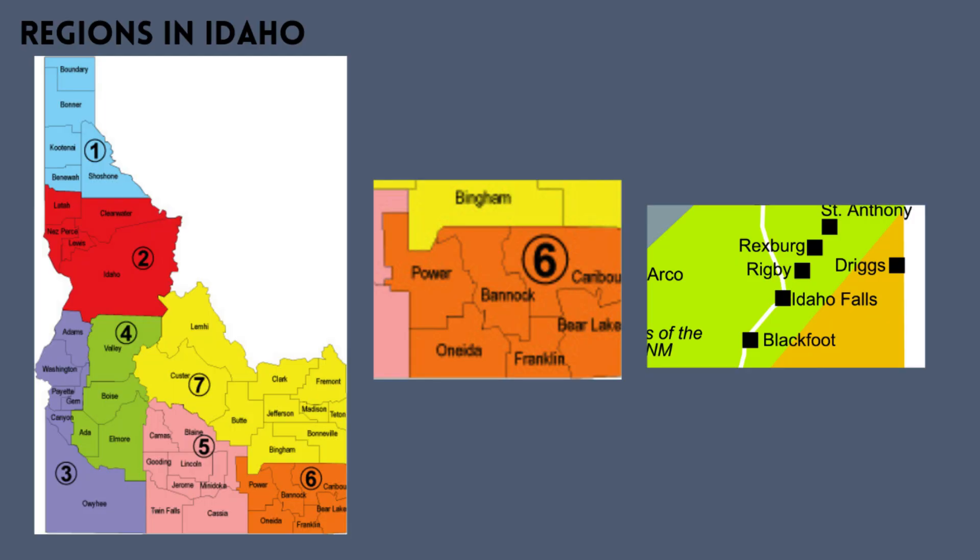The eastern Region 6 encompasses Idaho Falls, Rexburg, and Island Park areas. This region has 201 sunny days per year, 12 inches of rain per year, 93 days of precipitation per year, an average July high of 86 degrees, an average January low of 12 degrees, and on average 38.9 inches of snowfall per year.